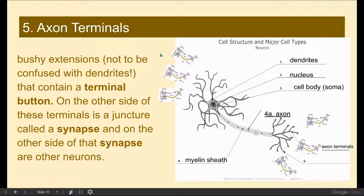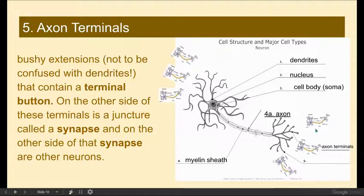Here we have some neurons up here, a gap, the dendrites of this particular neuron that we are diagramming, and then as that electrical impulse travels down the length of the axon to the axon terminals — if indeed there is an action potential — it is now connected to these other neurons throughout the body, and between those are synapses.